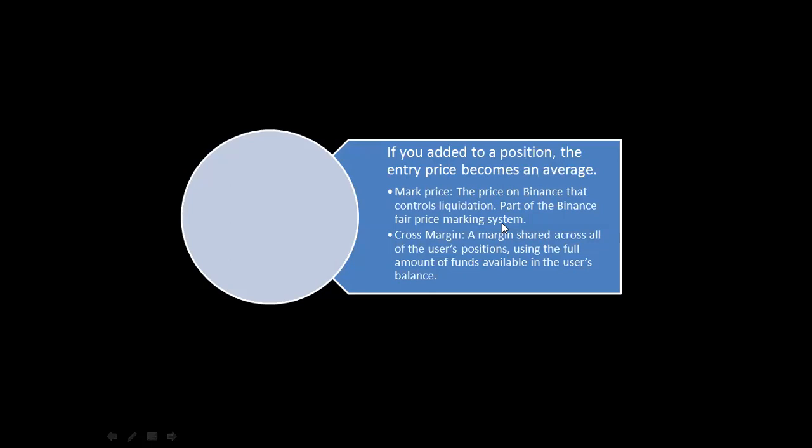The reason there is usually a difference between the mark price and the normal price is to control market manipulation. If a coin like ZIL had the same price in futures as in spot markets, someone with a bigger capital could manipulate the coin's price by buying up or selling off a huge volume, causing a drastic drop and liquidating many traders. The mark price helps to checkmate or control manipulations in the market.